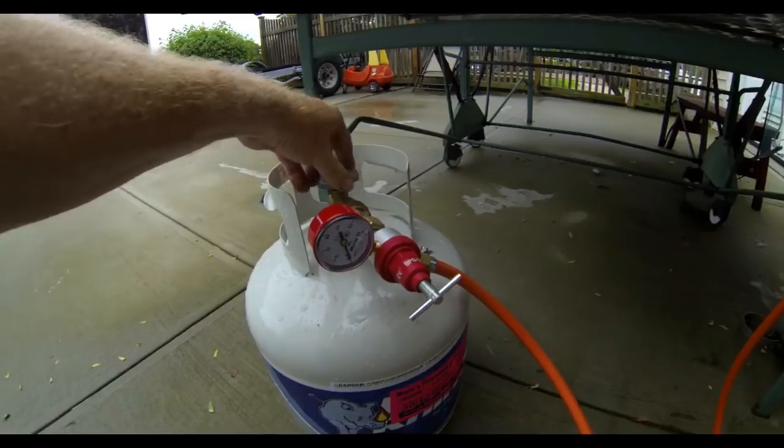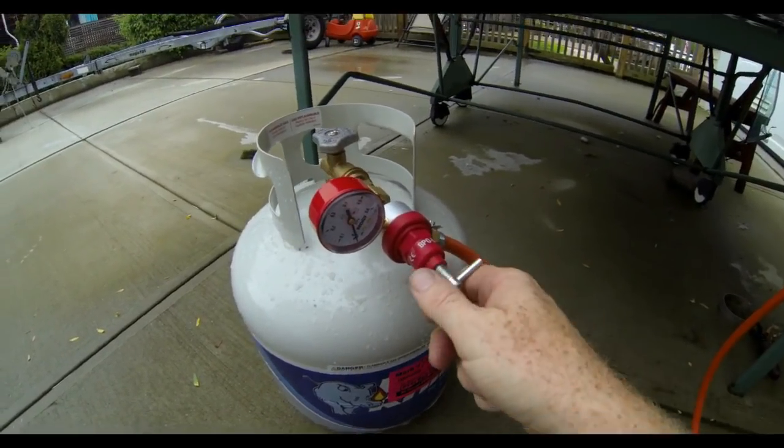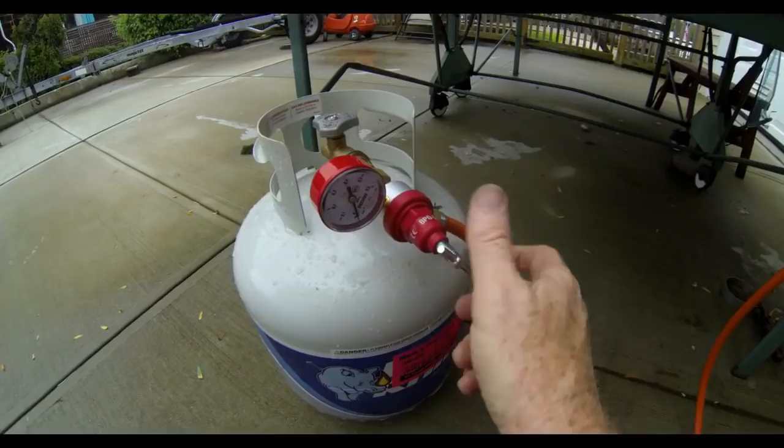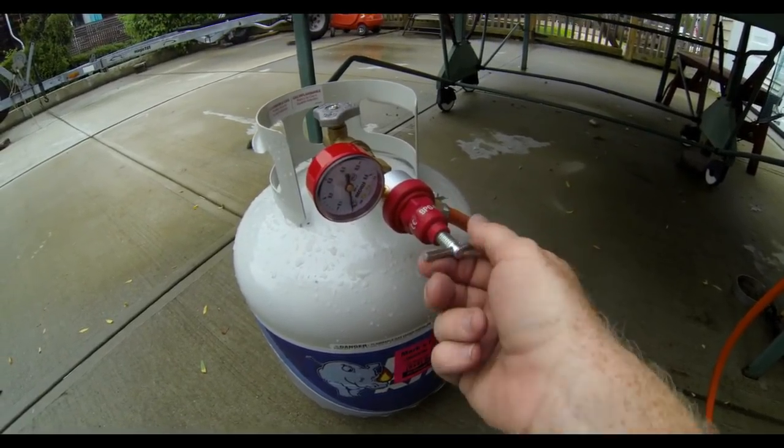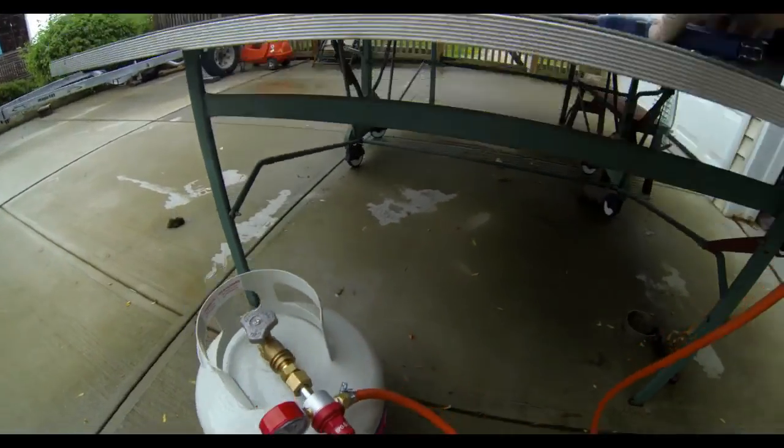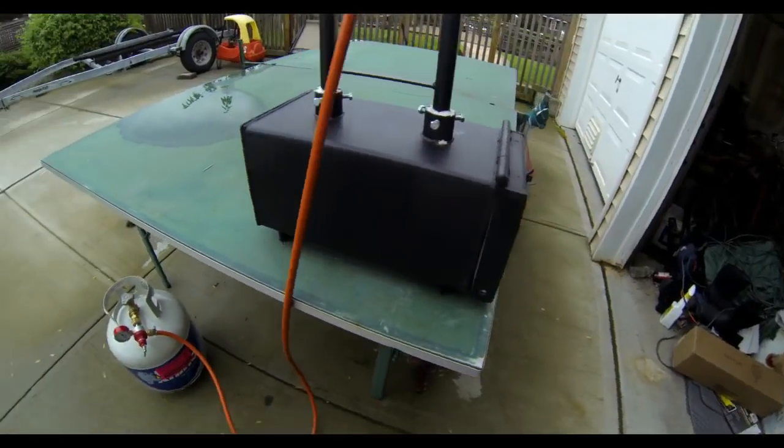Alright, put the propane on. You actually have to dial the regulator to the right in order to increase the pressure. And then using a barbecue lighter, I'm going to come in from the side and light it.